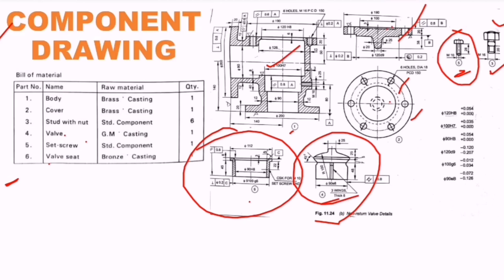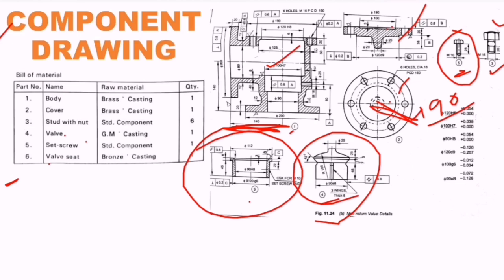If the question states that this is 140 in length, we should maintain 140 length only. If the diameter of a circle is given as 190, we should maintain 190 only. Whatever dimensions are given in the question, we indicate those dimensions exactly. This is very important.